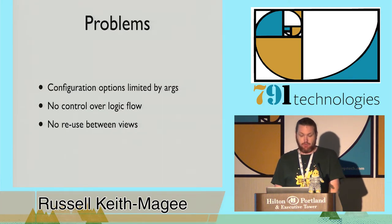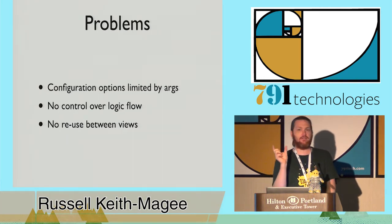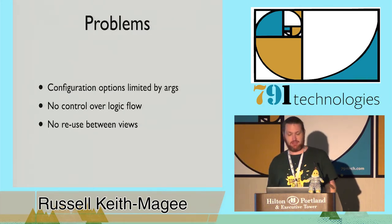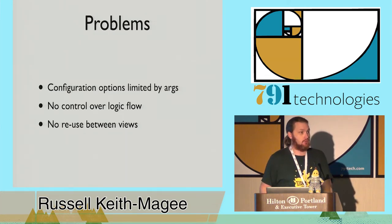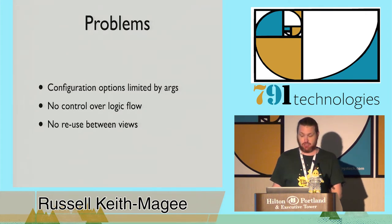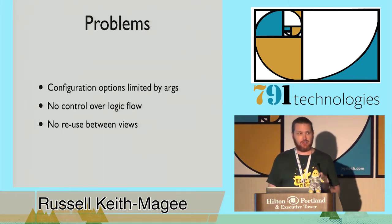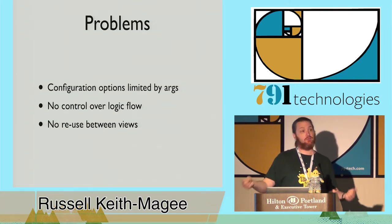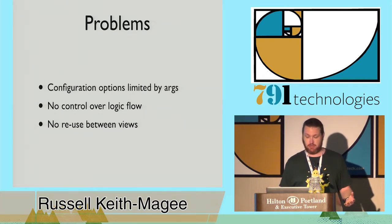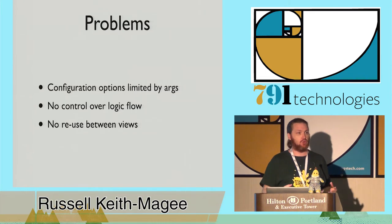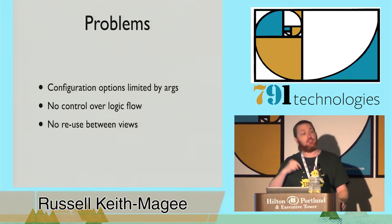There are some problems though. Configuration options for a generic function view are limited by the arguments you can pass in. If you want to instantiate a different form based on some property of the object you've retrieved, you can't do that. If you want to perform logic after the form has been validated but before it's saved, unless you put that logic on the form's save method itself, you don't have an entry point to inject that logic. Do you want to pass extra arguments like the request to form instantiation? Unless you can put it in a decorator, you can't. Do you have common permissions logic to run? Unless you can put that on a decorator, you can't do it.